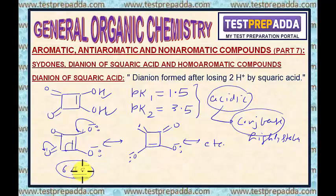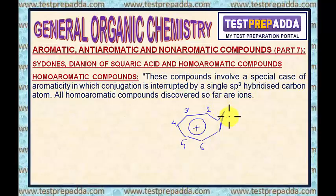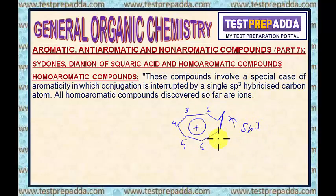Now I will talk about homoaromatic compounds. Dear students, homoaromaticity in organic chemistry refers to a special case of aromaticity in which conjugation is interrupted by an sp3 hybridized carbon atom. Traditionally, it was thought that continuous overlap of p orbitals is the basic requirement of aromaticity. But in this case, although there is interruption by this sp3 center, the compound has considerable stability.